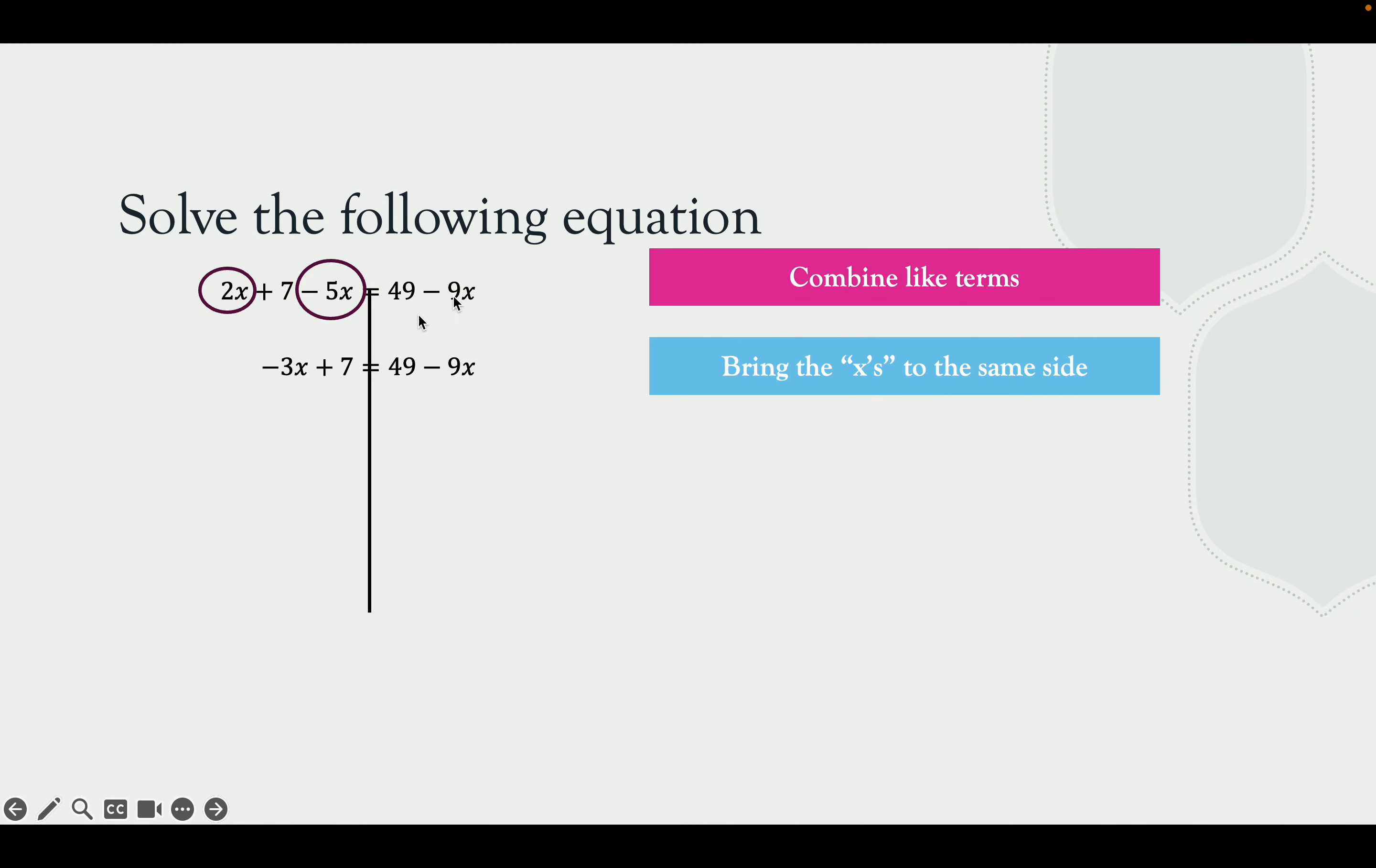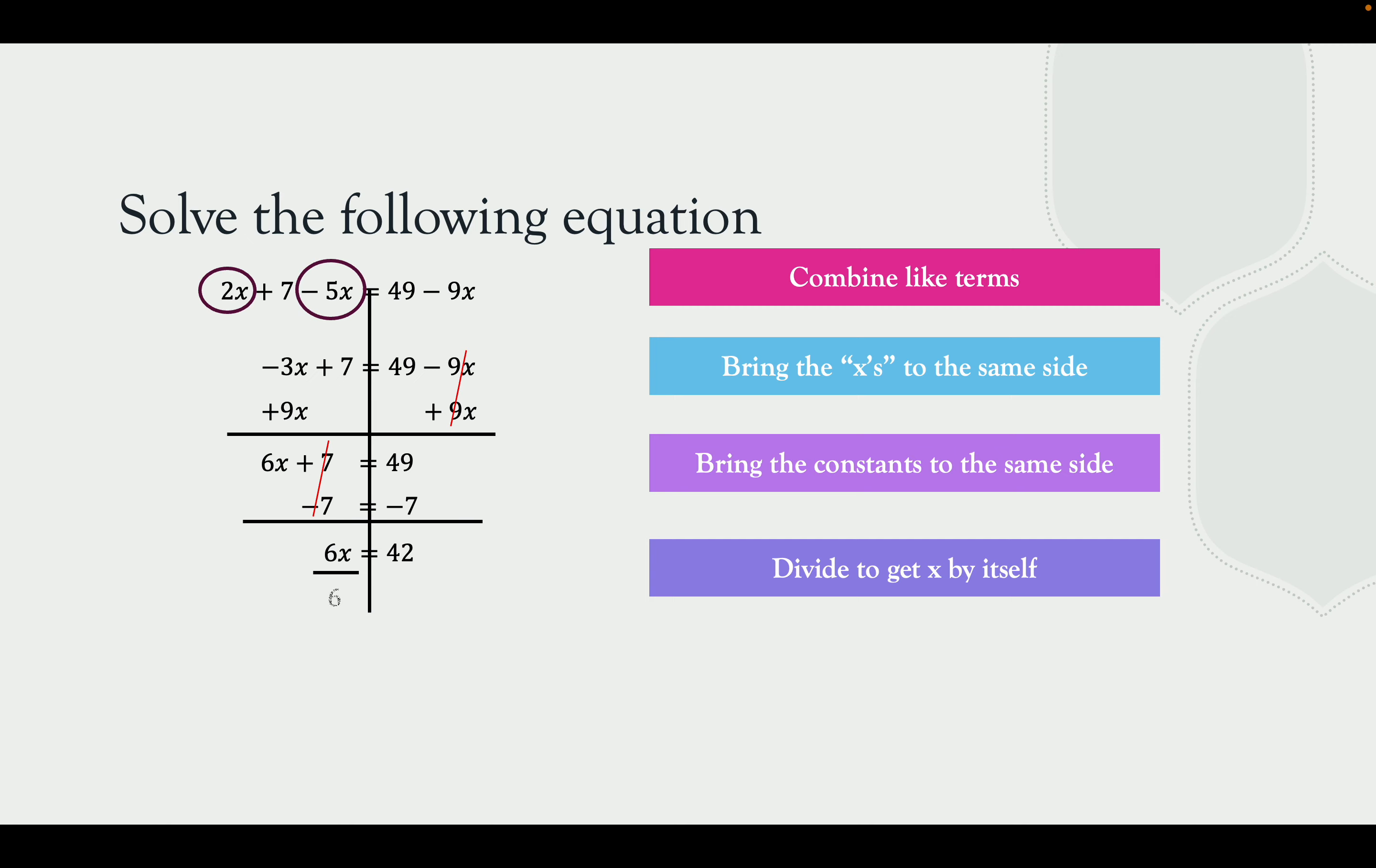So now we need to bring the x's to the same side. So I like bringing the x's over to the left. I have a positive 9x over here. So I'm going to add 9x to both sides. It's going to cancel out the x's on the right. Negative 3 plus 9 is going to leave me with 6x. Bring the 7 down. Bring the 49 down. Now we need to bring the constants to the same side. To do that, I have a positive 7 or 6x plus 7. I can't combine that. So to get rid of that positive 7, I'm going to subtract 7 on both sides, leaving me with 6x equals 42.